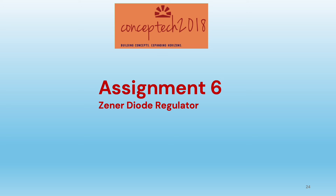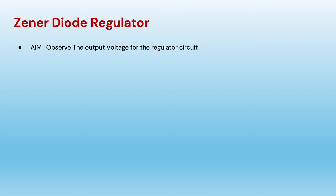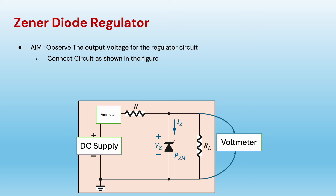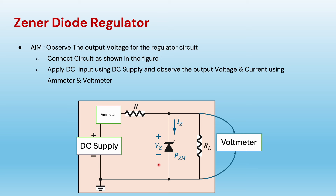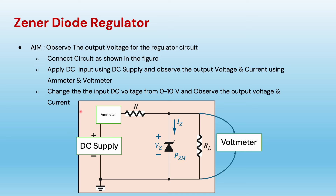This is the last assignment, assignment 6, on zener diode regulators. The aim of this experiment is to observe the output voltage of the regulator circuit. We have a zener connected in reverse bias. We will apply DC supply and observe the DC current through a meter and the output voltage on the voltmeter. The input is changed from 0 to 10 volts, and we will see how this circuit works as a regulator — giving constant output voltage even when input supply is changed.